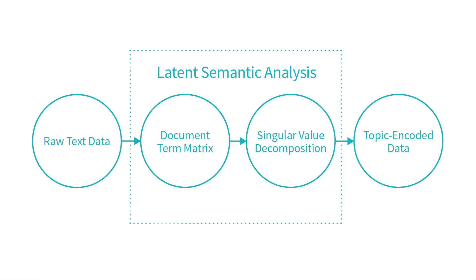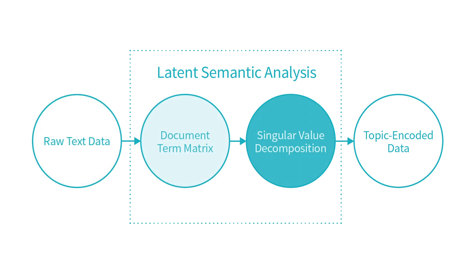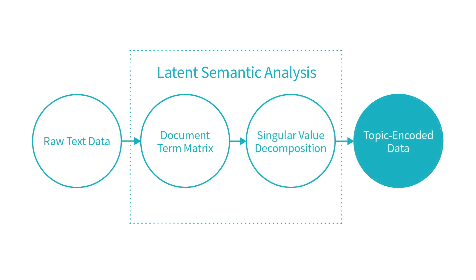We will first bring in our data as raw text data, transform it into a document term matrix, perform a singular value decomposition on the document term matrix, and finally we are left with topic encoded data.